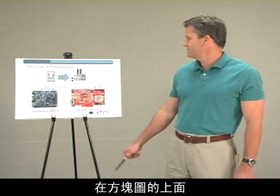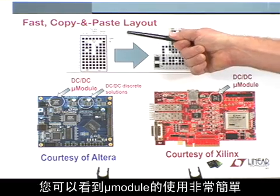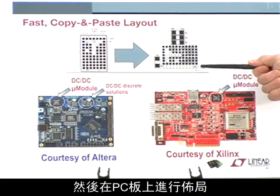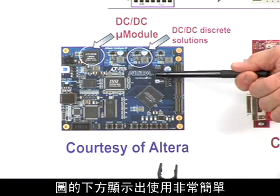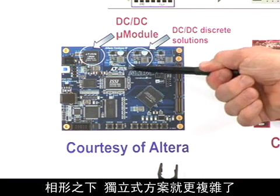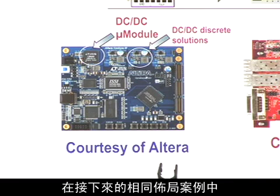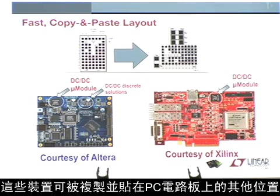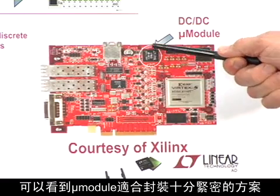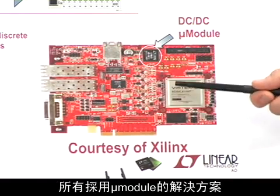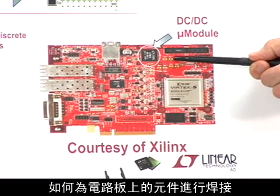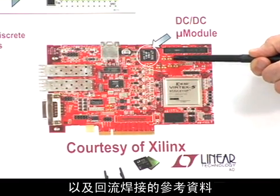Let's look at some PC board layout examples. The top of the diagram shows the ease of use of the MicroModule — all that is necessary is following the recommended data sheet layout example placed on the PC board. The bottom shows the DC MicroModule simply placed on a board in comparison to the more complex layout of discrete solutions. These devices can be copied and pasted to other locations on the PC board, and can fit into very tight solutions. All of these designs can be supported using reference material from our website for soldering and reflowing the part on a board.